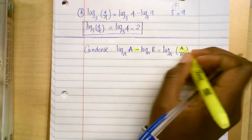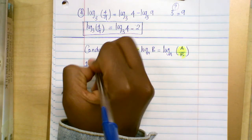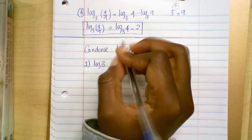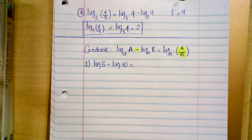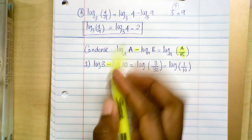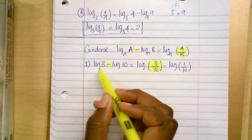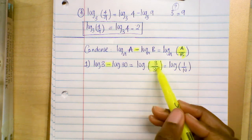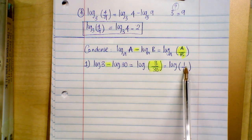The first condensed example: the common log of three minus the common log of 30. Please pause the video and do your best. Since we have subtraction and they share the same base, we write a single log with the ratio of those two numbers. That's the common log of (three over 30), which simplifies to the common log of one over ten.